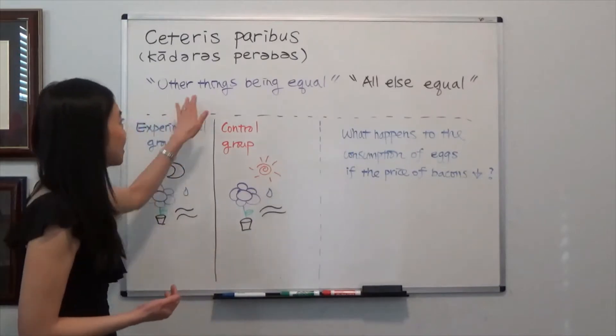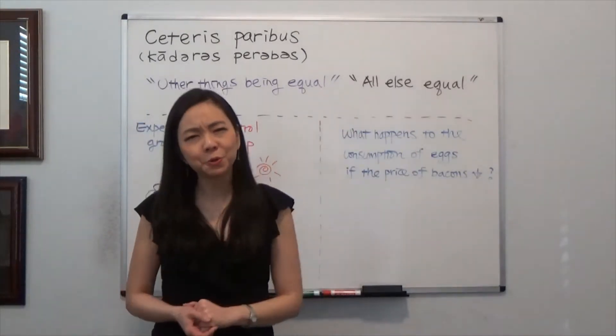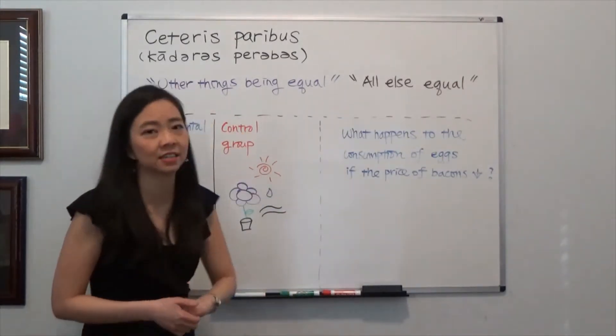And that is also known as other things being equal or all else equal. So you'll be asking, why do economists talk like that? Why do we have to emphasize Ceteris Paribus?